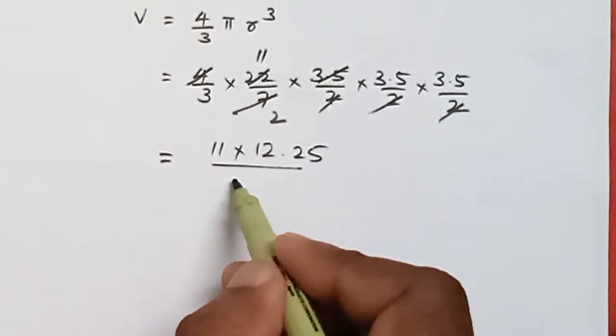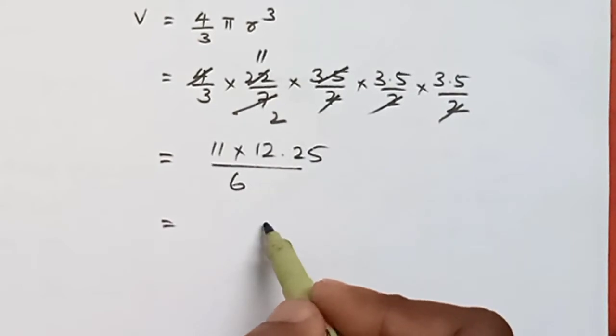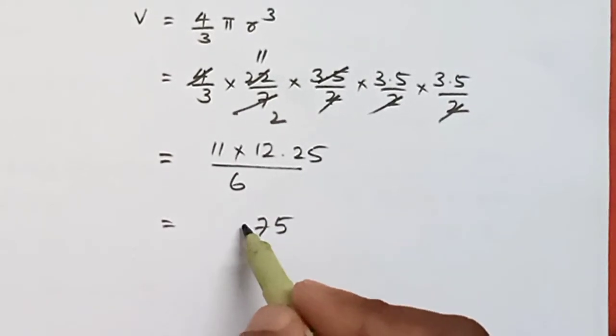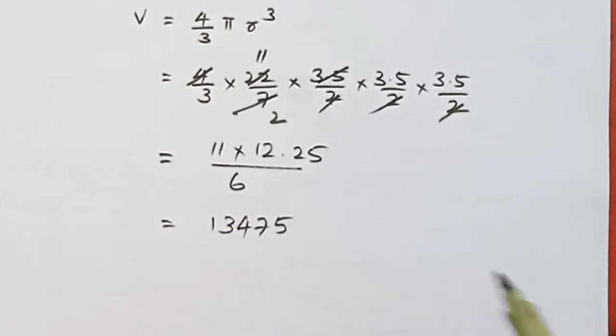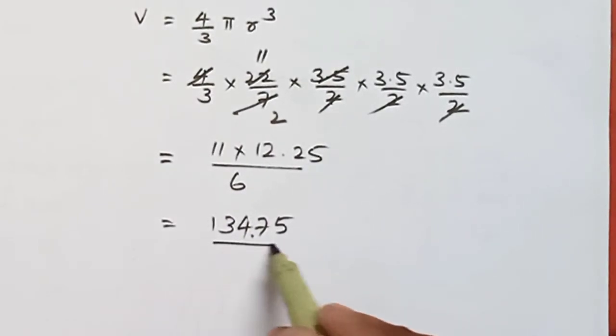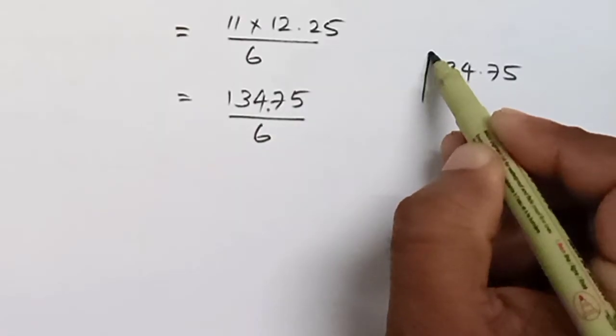3 times 2, 6. 11 times 12.25 that is 5, 7, 4, 3, 1. So 134.75 divided by 6.